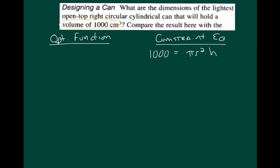Okay. The optimization function, they've talked about it being the lightest open top right circular cylinder. Well, that just means that we're going to use the least amount of material. So the surface area, we're going to minimize the surface area. So the surface area of a cylinder without a top is going to be the base, which is pi r squared, plus the sides, which is 2 pi r times h. Now that's going to be, let's say that's material, m equals that.